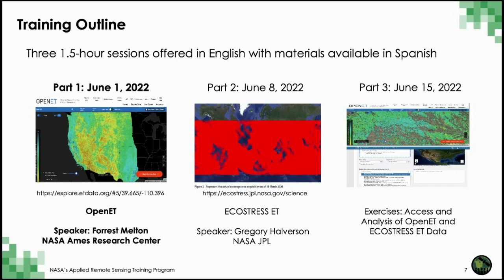The training outline includes three sessions, each one and a half hours long, offered in English with materials available in Spanish. Today's session will be about OpenET, presented by Forrest Melton from NASA Ames Research Center. The second session on June 8th will focus on EcoStress ET, presented by Gregory Halverson from NASA JPL. The final session on June 15th will have exercises on how to access and analyze OpenET and EcoStress ET data products.